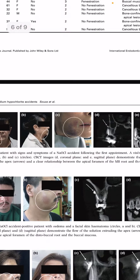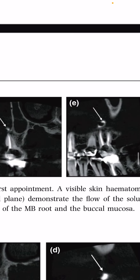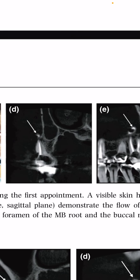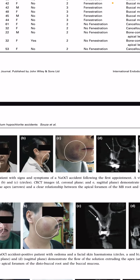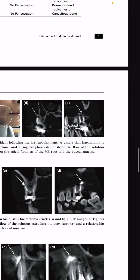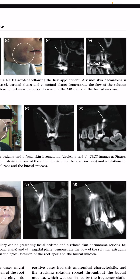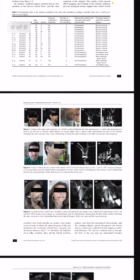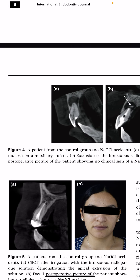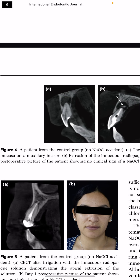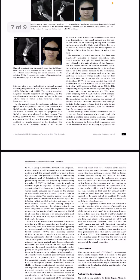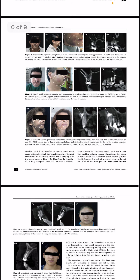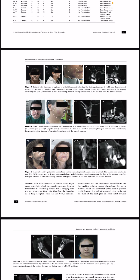Here are some example cases where you can see that the buccal bone had been fenestrated, and the radiopaque material appears in the buccal soft tissue space. Case one, case two, and case three all had the same or similar representations. In the control cases, however, there was no contact or fenestration into the buccal mucosa.